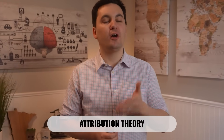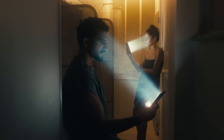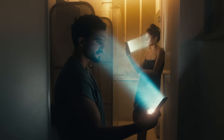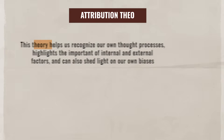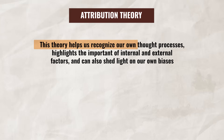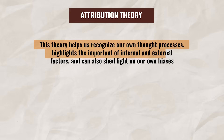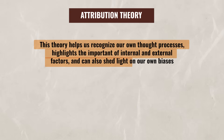This is dispositional attribution, since the explanation is on the person's internal characteristics. Both dispositional and situational attributions are part of the attribution theory. The attribution theory explains how people interpret and explain the causes of behaviors. This theory helps us recognize our own thought processes, highlights the importance of internal and external factors, and can also shed light on our own biases.